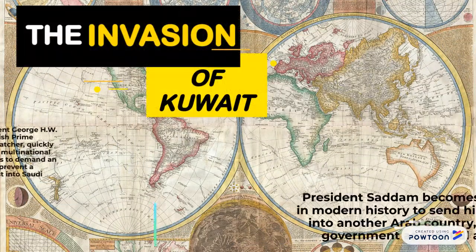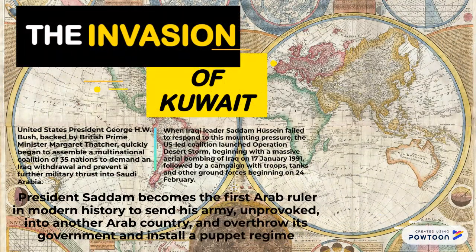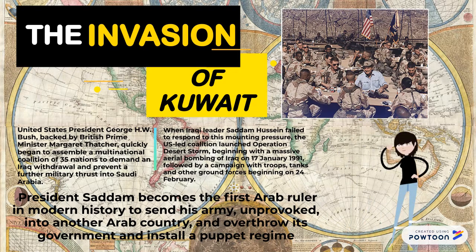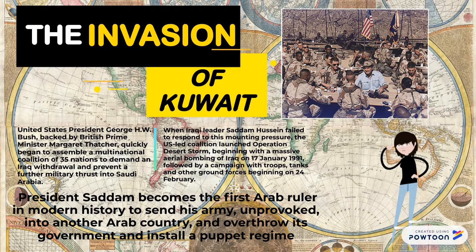The Invasion of Kuwait. President Saddam Hussein became the first Arab ruler in modern history to send his army unprovoked into another Arab country, overthrow its government, and install a puppet regime.